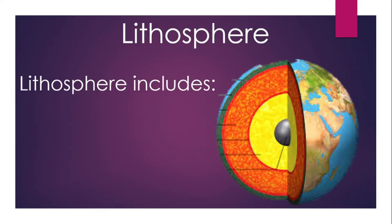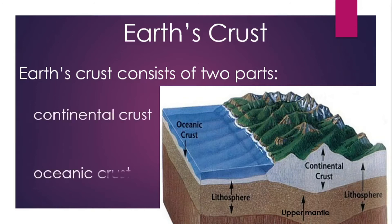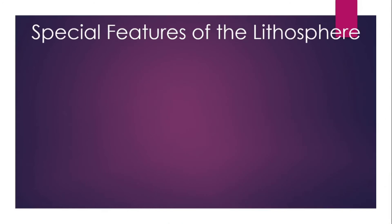Now we are going to learn about the lithosphere and its composition. The lithosphere includes the earth's crust and upper mantle. Look at this diagram — it will give you a clear idea about the composition of the earth's crust. The earth's crust consists of two parts: continental crust and oceanic crust.